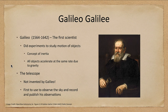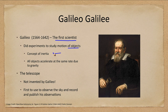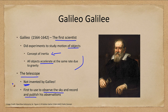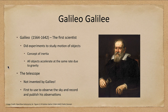Another important astronomer of this time is Galileo, sometimes considered the first scientist — we'll look at him again in the next chapter. He did experiments to study the motions of objects, giving us the concept of inertia that Isaac Newton would later incorporate into his laws, and the idea that all objects accelerate at the same rate due to gravity. Galileo is also known for the telescope — he did not invent it, but he was the first to observe the sky and record and publish his observations, so he gets credit for it. Perhaps other people looked at the sky, but they did not record their observations.